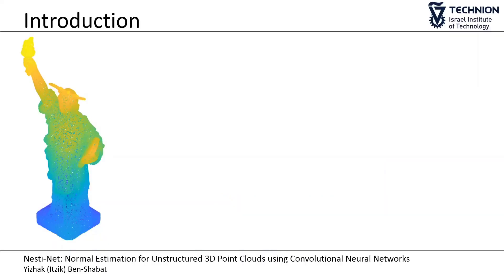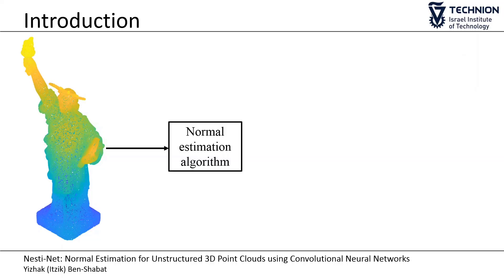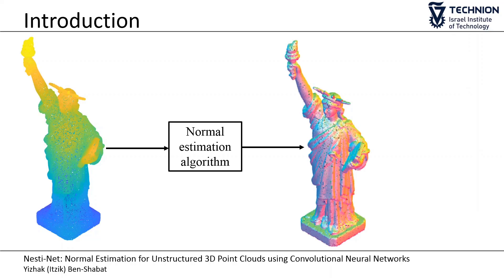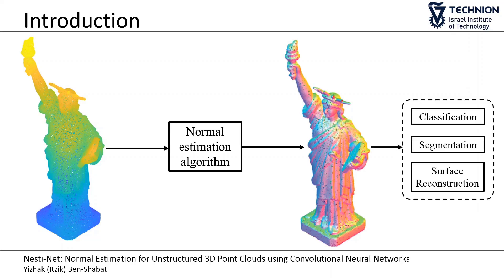Normal estimation for unstructured point clouds is a fundamental problem in shape analysis. Adding normal information to the point cloud data can significantly improve various vision tasks such as classification, segmentation, and surface reconstruction.